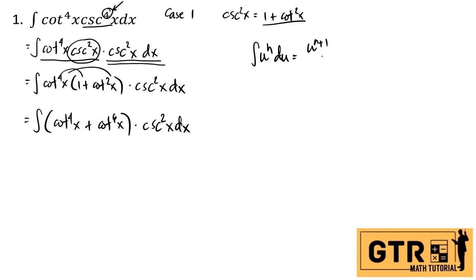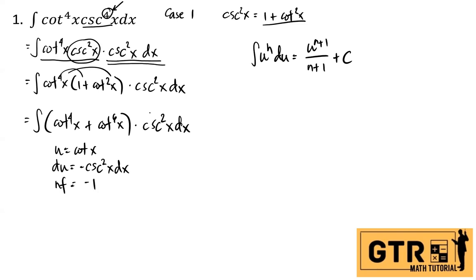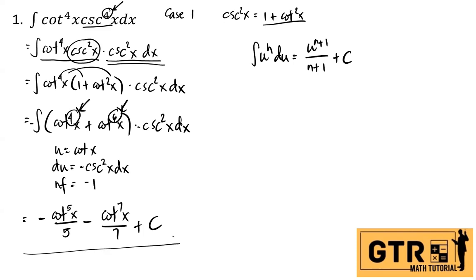The formula for that is u to the n+1 over n+1 plus C. Our u here is cotangent x, and du equals negative cosecant squared x dx. Since we don't have a negative sign, we introduce a neutralizing factor of negative 1. Therefore the answer is: negative cotangent to the fifth x over 5, minus cotangent to the seventh x over 7, plus C. This is the final answer for number 1.